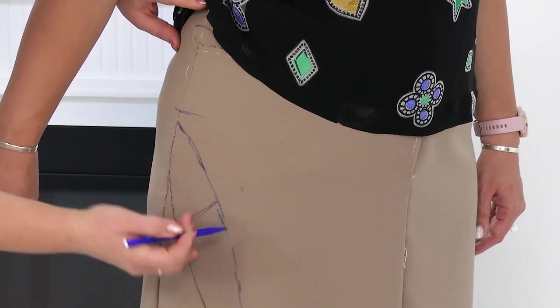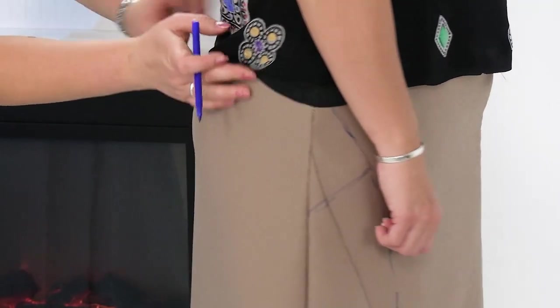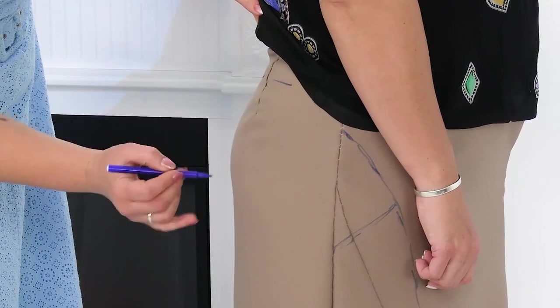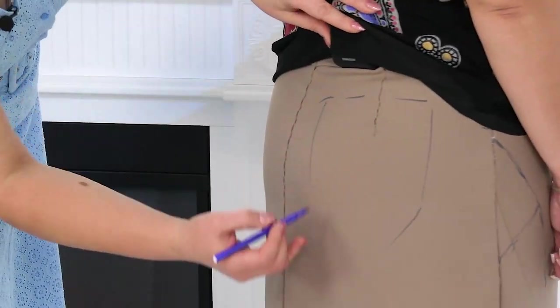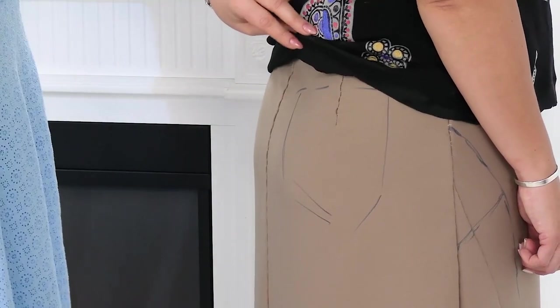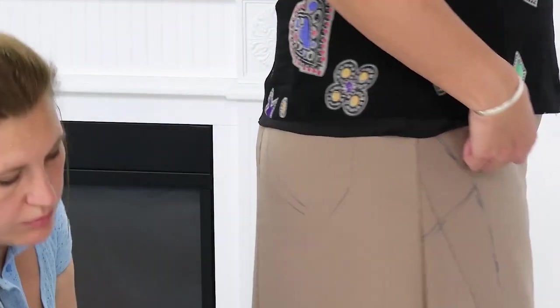Just loosen it a little bit, changing this line. And I also want to draw the approximate spot of the pocket. Now that the skirt is on Inga, we'll adjust the shape later. That's it.